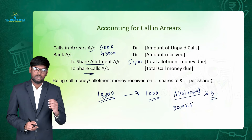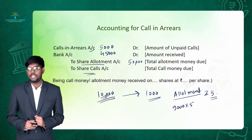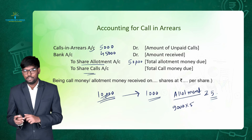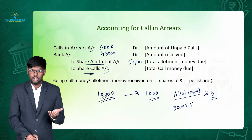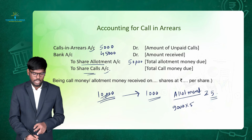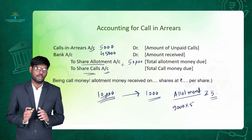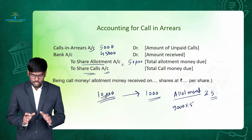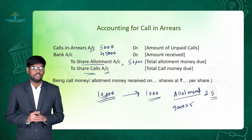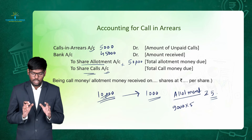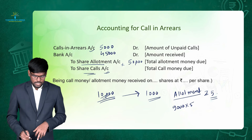If the shareholder is unable to make the payment of call money — whether it is the final call, first call, or second call — in that case I will be crediting that particular call account and not the share allotment account. So this accounting entry we have to pass whenever there is a call in arrears.